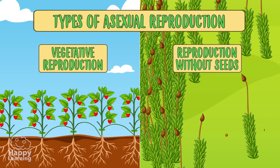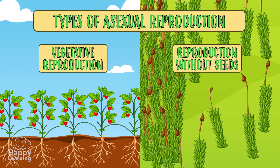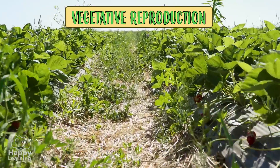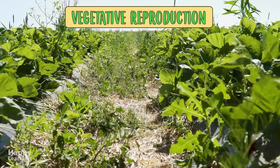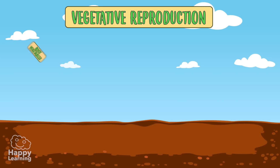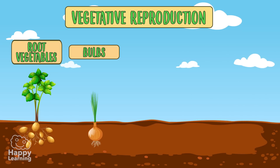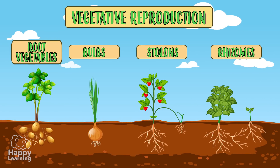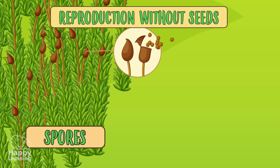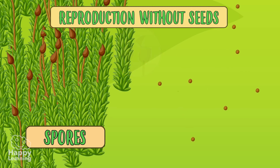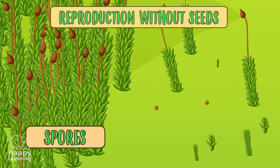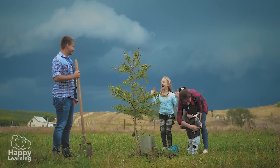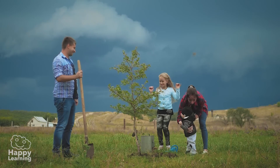Let's get to know them! If you want to learn about vegetative reproduction — what root vegetables, bulbs, stolons, and rhizomes are — or how plants without seeds reproduce, including what mosses and ferns are, and if you want to get an excellent grade on your exam, click on the link below.